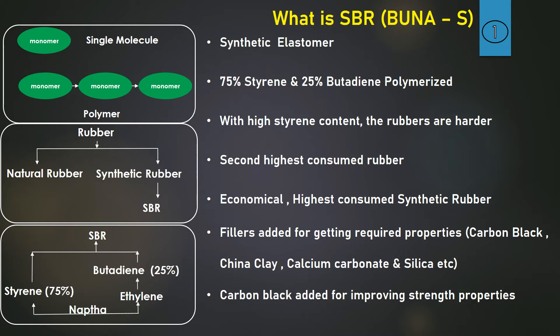From naphtha, styrene is obtained, and ethylene is also obtained. That ethylene is further converted into butadiene. This butadiene at 25% and styrene at 75% are combined to yield SBR.